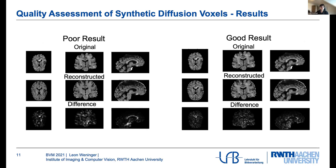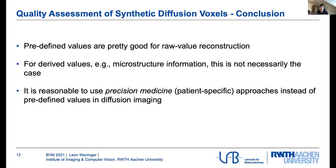This can also be seen when comparing one good and one poor result in the images. In the last row we have the differences. For the good result, the error is quite uniformly distributed across the brain. For the poor result, we see certain areas have a much larger error than other areas. So finally, we can say that the predefined off-the-shelf values were already really good for raw signal reconstruction, with no large difference against other approaches. However, for derived values — microstructure information, FA values, and fiber direction — this is not the case, and it is actually reasonable to use patient-specific approaches and extract values from every individual subject. Thanks for your attention, and I would be open for questions.